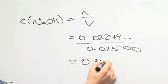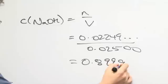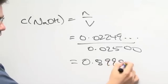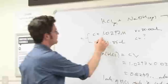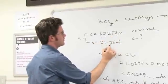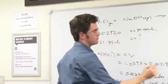0.8995578. And how many significant figures do we have? 1, 2, 3, 4. So 4 sig figs.